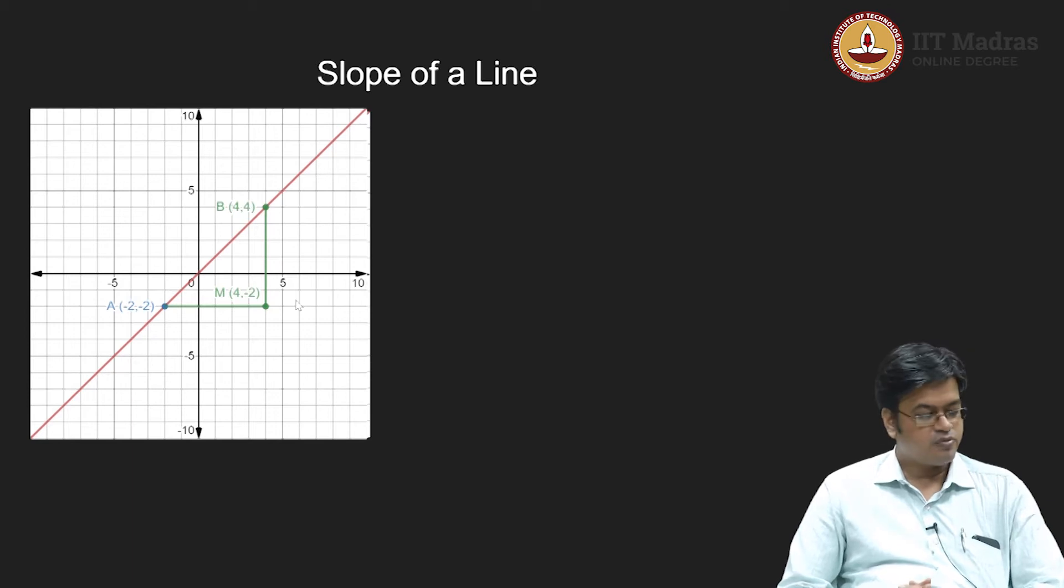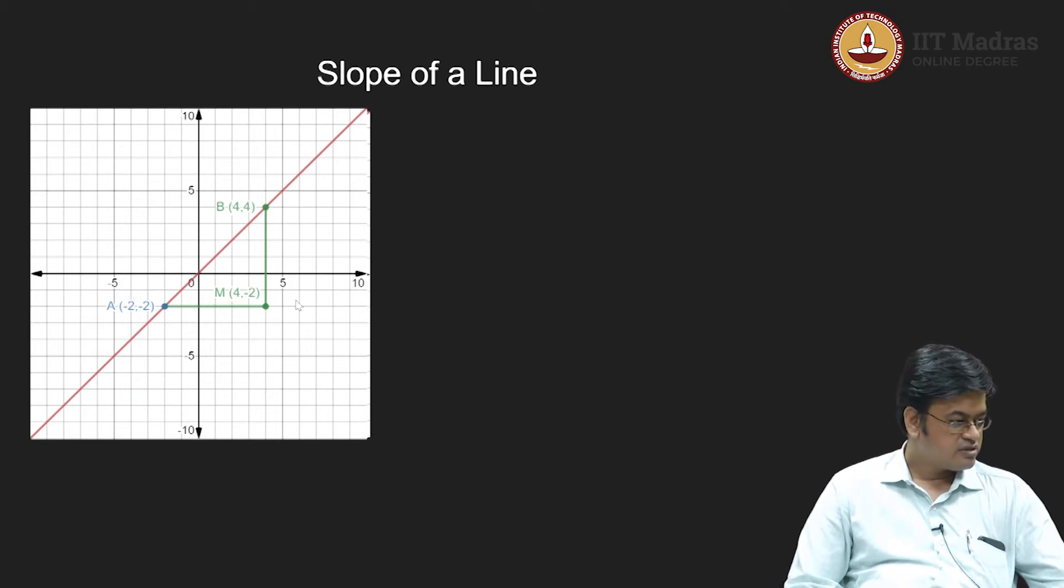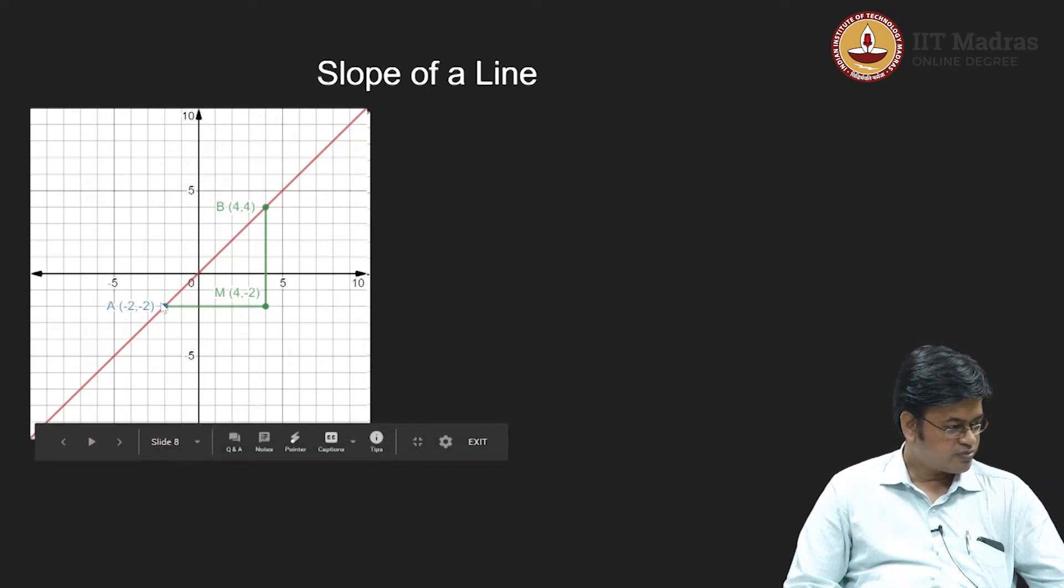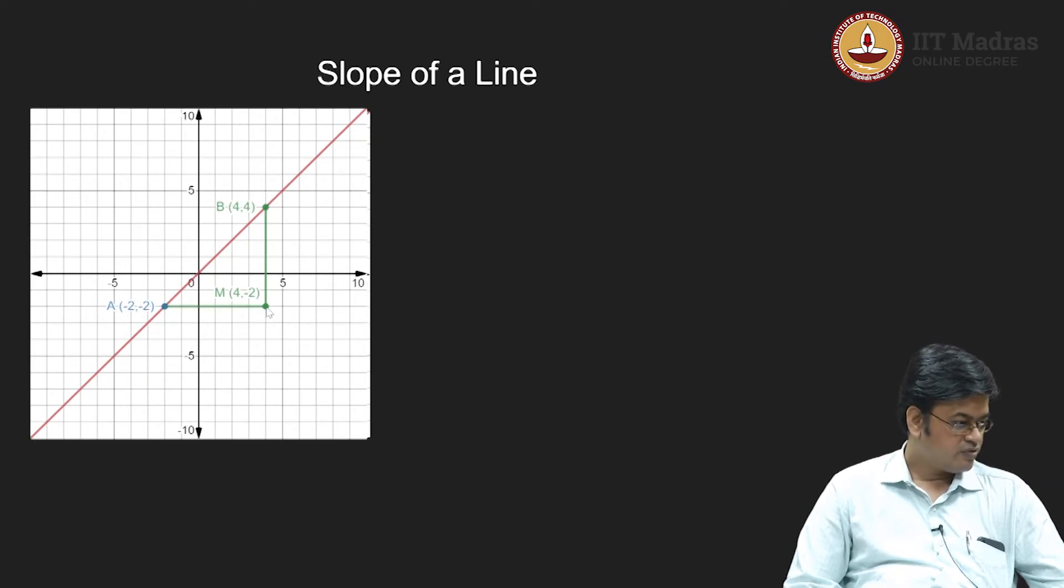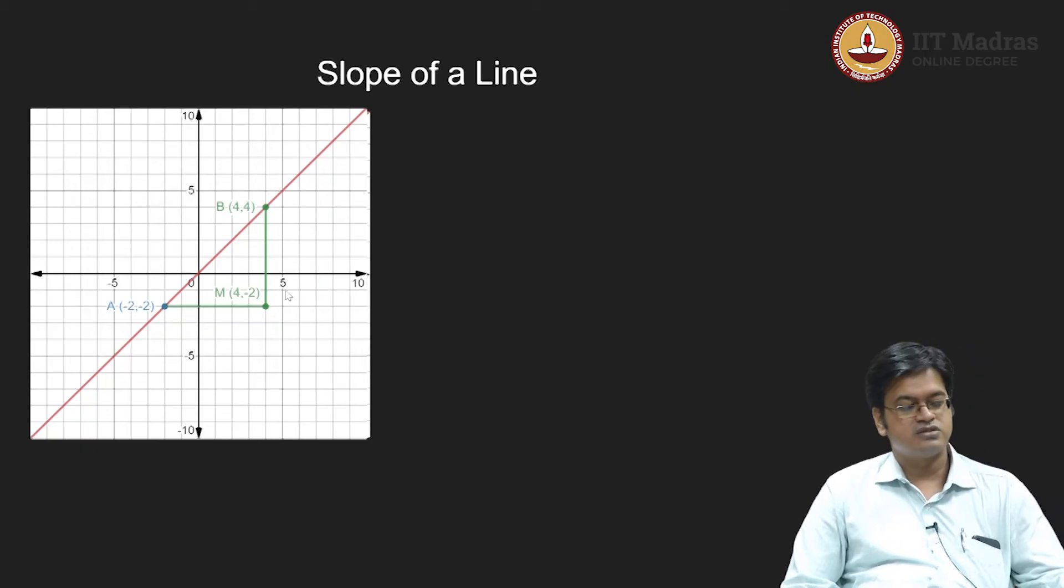So essentially what I need to capture is the change in this direction from this point to this point, that is minus 2 comma minus 4, minus 2 minus 4, that means minus 6, and here also minus 6. So the slope of a line can be equal to 1.